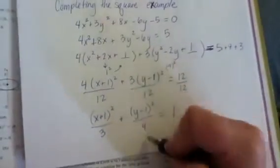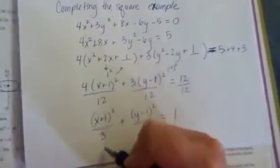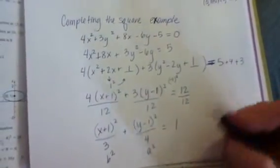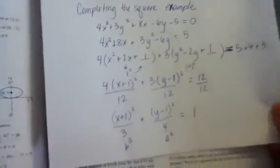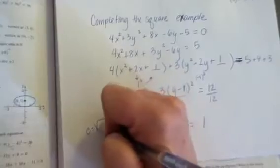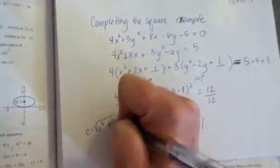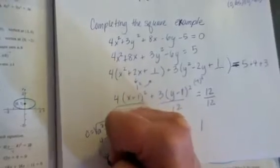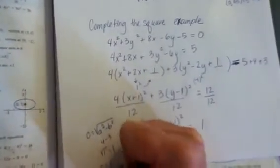So this becomes our a squared, and this is the b squared. And of course, if we're going to want to find c squared, we would have to do our little formula. c equals the square root of a squared minus b squared. So it would be 4 minus 3, which is the square root of 1, which is 1. So that's kind of nice, c is 1.